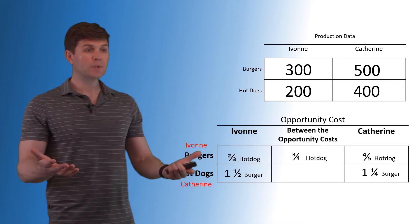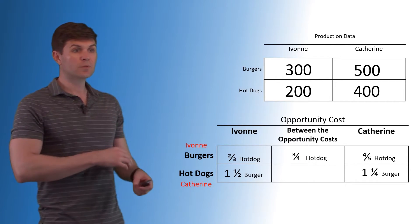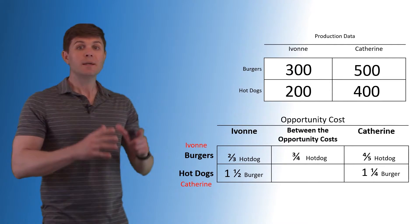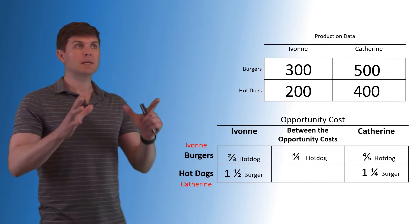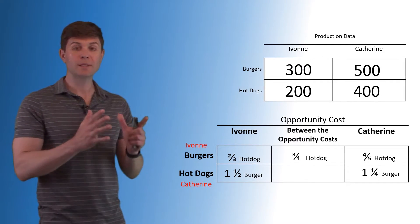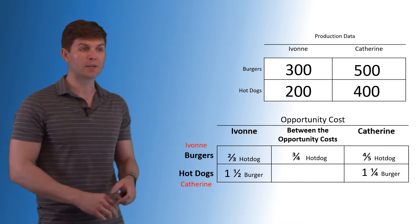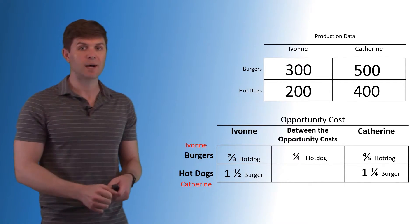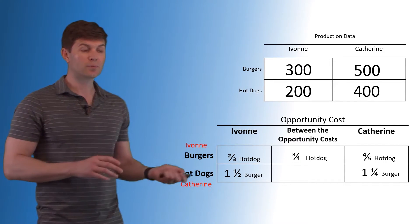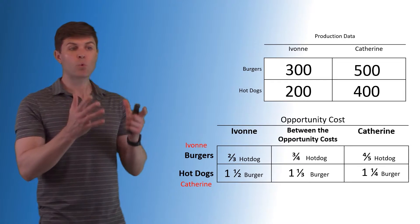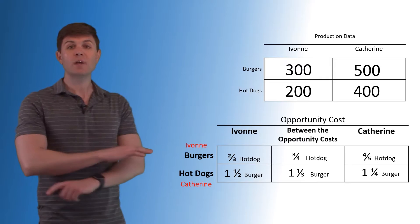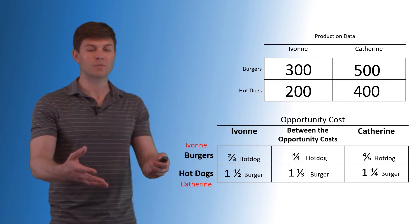What falls between the opportunity costs? Yvonne's opportunity cost is two-thirds of a hot dog, Catherine's is four-fifths, so three-quarters of a hot dog is one value that fits in there. It doesn't mean that's the only answer — anything greater than two-thirds but less than four-fifths would be an acceptable terms of trade. One burger for three-quarters of a hot dog, one burger for seven-tenths of a hot dog — any of those work as long as it falls between those opportunity costs. In terms of hot dogs, one hot dog for one and one-third burgers would be an acceptable terms of trade. Now that we have all the information we need, let's start to attack the questions.